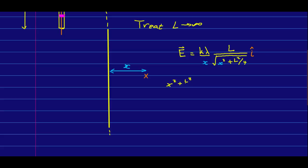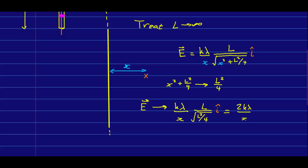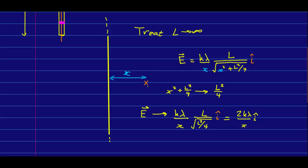And so, our E field is going to go to, and that square root, square root of L squared over 4, is just L over 2. And so, the Ls are going to cancel, and all we're going to get is this.